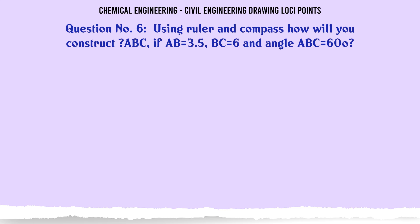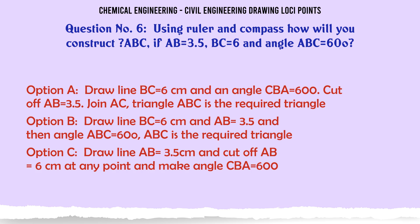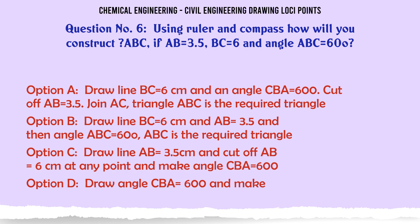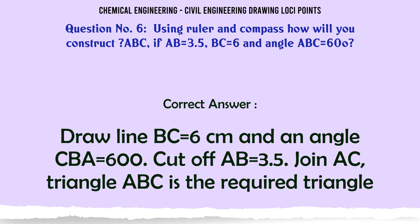Using ruler and compass, how will you construct triangle ABC if AB=3.5, BC=6, and angle ABC=60°? The correct answer is: draw line BC=6 centimeters, make angle CBA=60°, cut off AB=3.5 centimeters, join AC — triangle ABC is the required triangle.